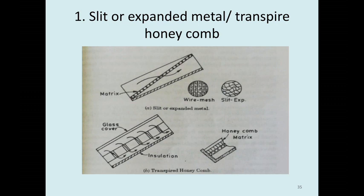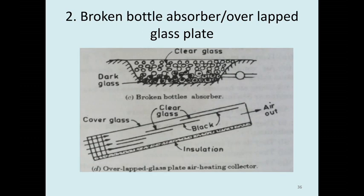To eliminate these drawbacks, porous type absorbers are used. The first method uses slit, expanded metal, or honeycomb structures in the absorber plate. Air flows through these porous structures such as wire mesh or slit openings. The second method is the broken bottle absorber or overlapped glass plate method, where dark glass absorbs heat and transfers it to the air flowing through. This increases the heat transfer rate effectively.